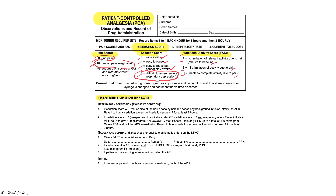Management is primarily based upon the sedation score. If the sedation score is 2, we should reduce the size of the bolus by half and cease any background infusion. We should notify the APS — the acute pain service — and revert to hourly sedation scores until the sedation score is less than 2 for at least two hours. So: reduce bolus by half, cease background infusion, notify the pain team, and return to hourly sedation scoring.